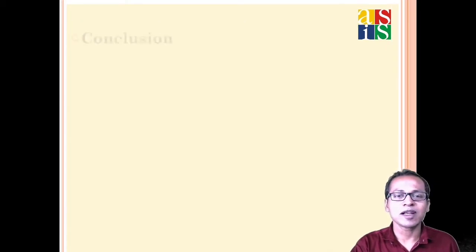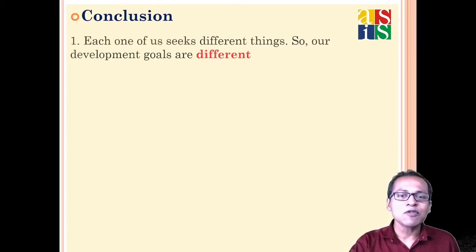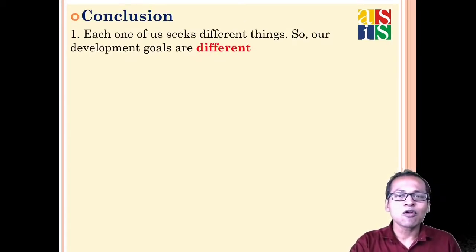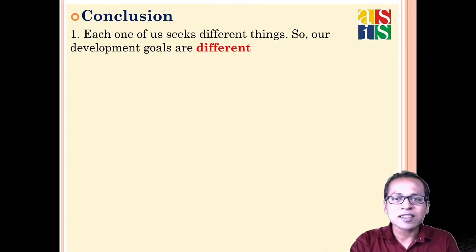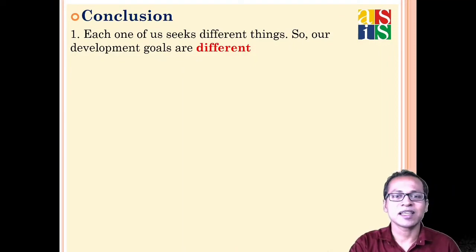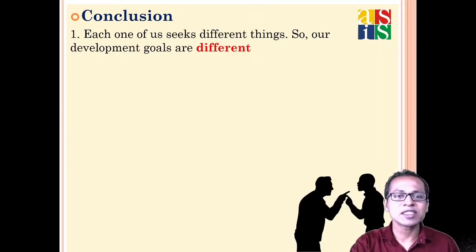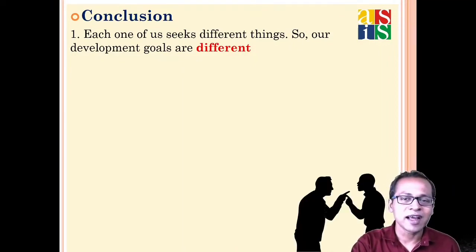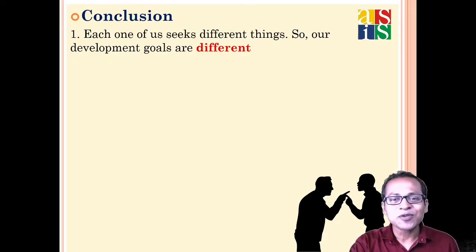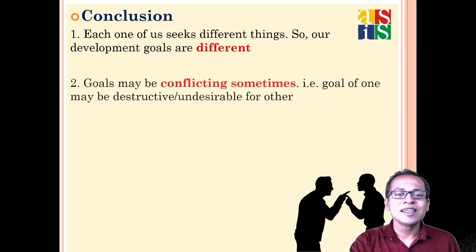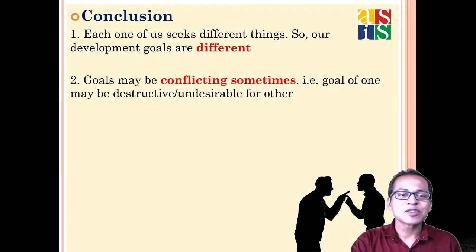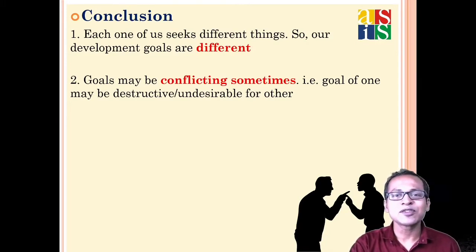What we conclude from this discussion is that each of us are wired differently and seek different things in life. Our goals are different because our desires and ambitions are different. And sometimes due to this difference, goals may be conflicting — the goal of one person may not be desirable for another.